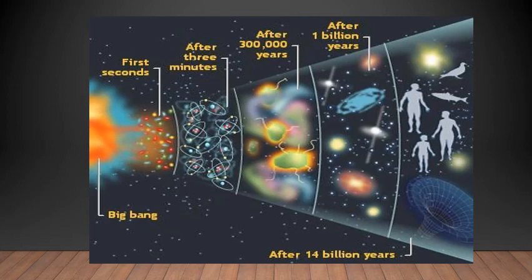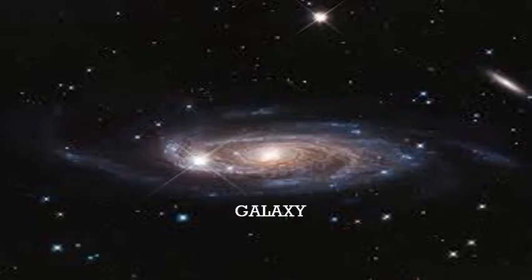The universe contains billions of stars. In fact, scientists believe there are as many stars in the universe as there are grains of sand along all the beaches and deserts on Earth. If you collect all the sand on beaches and deserts and count every grain, that number is equivalent to the number of stars present in our universe.